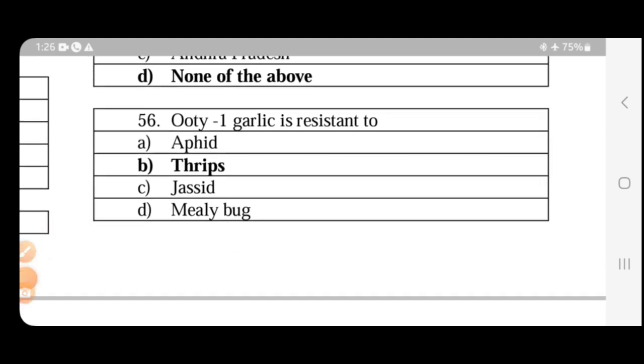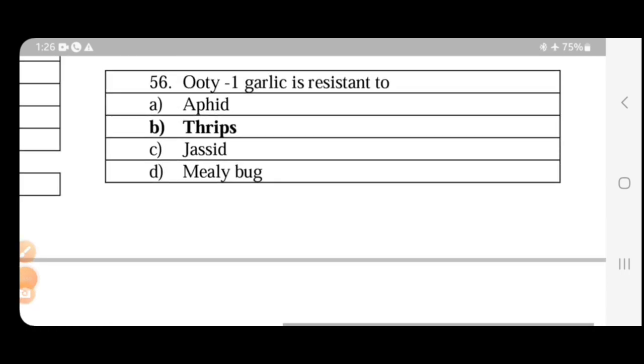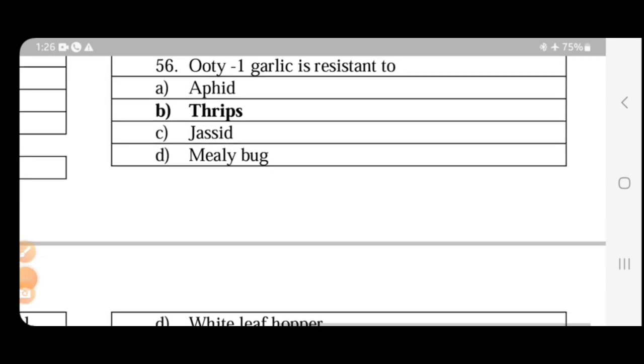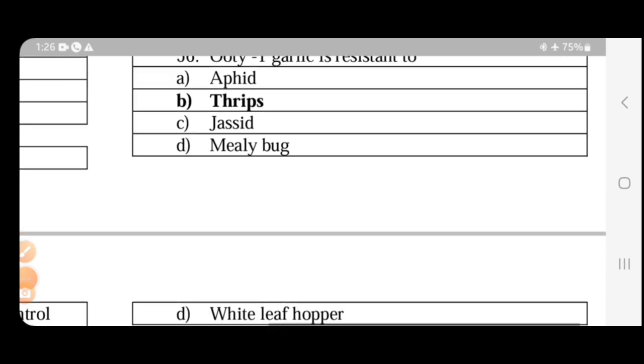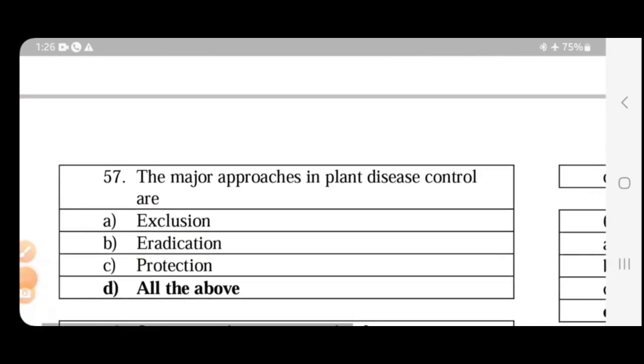Ooty garlic variety is resistant to thrips. Most important pest in garlic is thrips.